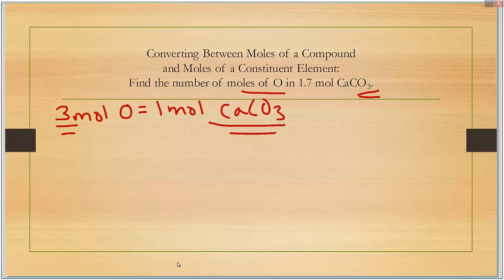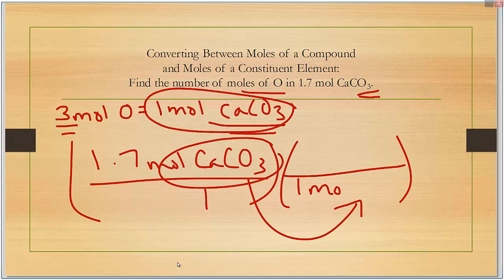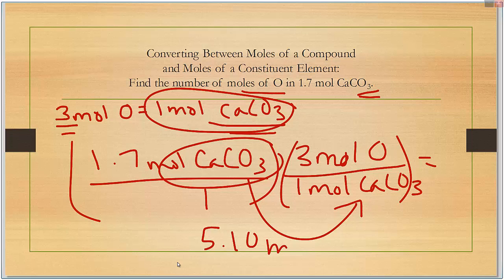Then we set it up just like a normal conversion. 1.7 moles of CaCO3 over one. We have moles of CaCO3 on the top. That means that's what we want to put on the bottom of the next bracket. If we look at our conversion factor, one mole of CaCO3 contains three moles of oxygen. So we end up multiplying 1.7 times three. That comes out to be 5.10 moles of just oxygen.